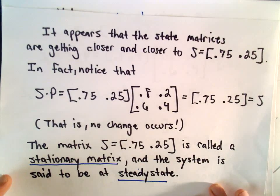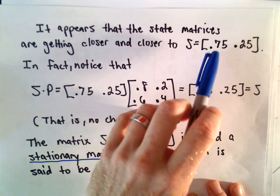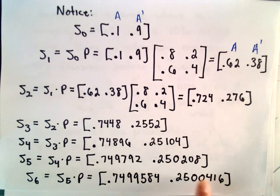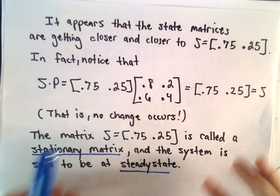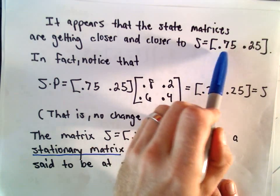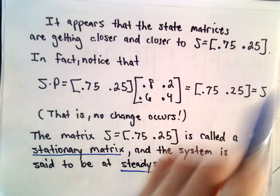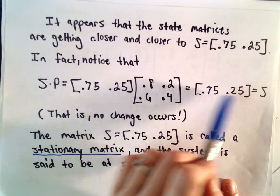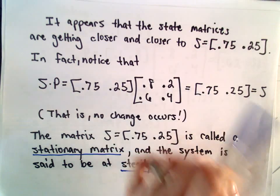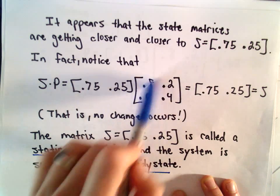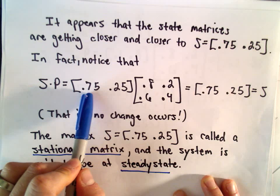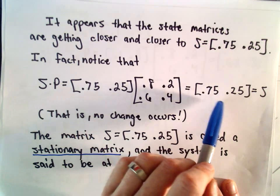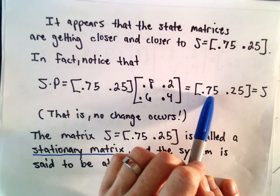So this is the idea. It looks like our state matrices are getting closer and closer to 0.75 and 0.25. And one thing to notice: if we actually take this matrix 0.75 and 0.25 and multiply it by our transition matrix, we actually get the exact same values back, 0.75 and 0.25. So under this advertising campaign, once they get to 75% of the market, nothing's going to happen. They're not going to lose any of the market, but they're not going to gain any either.